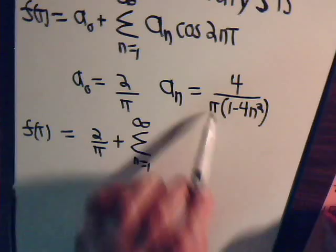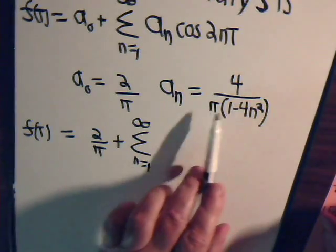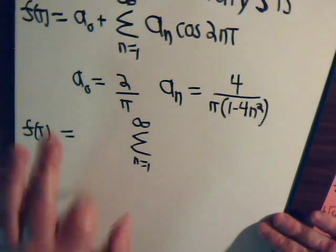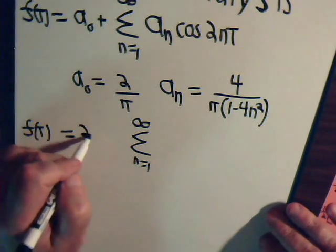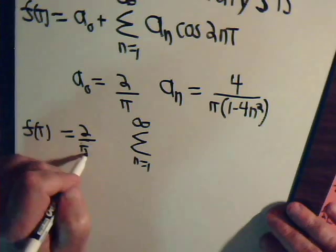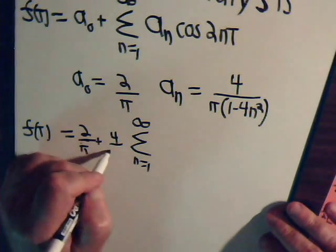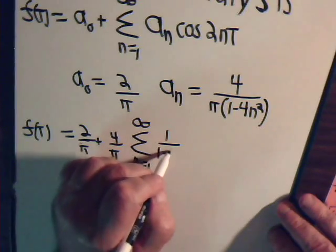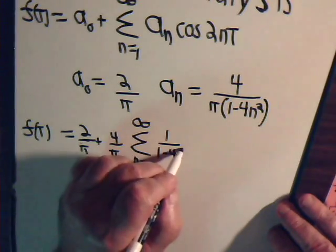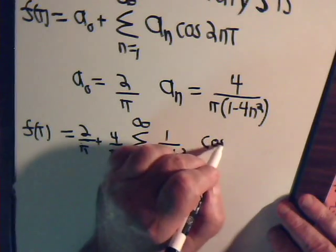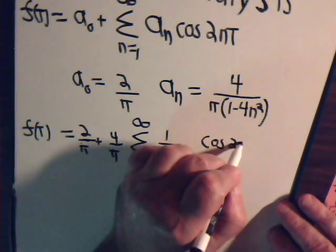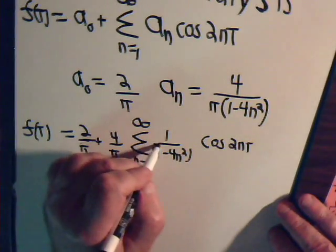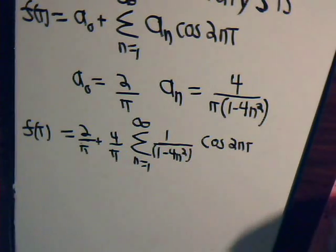And a sub n is four over pi, so we have four over pi times one over one minus four n squared times the cosine two n t. And that's it.